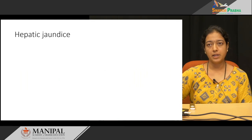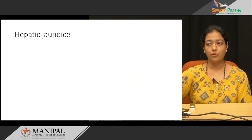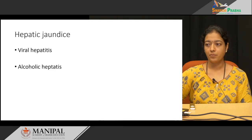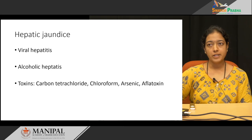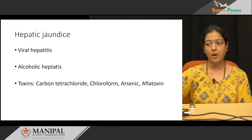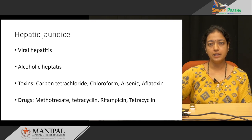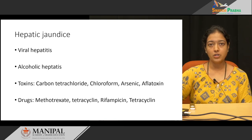Coming to hepatic jaundice — the causes include viral hepatitis such as hepatitis A, B, C; alcoholic hepatitis; toxins such as carbon tetrachloride, chloroform, arsenic, and aflatoxins; and some drugs such as methotrexate, tetracycline, rifampicin, etc. Hepatic jaundice may be due to viral, alcohol-induced, toxin, or drug-related causes.